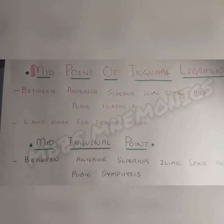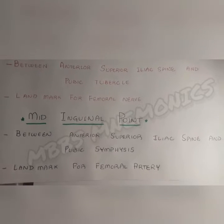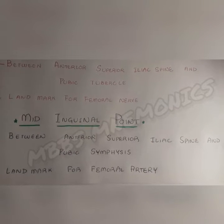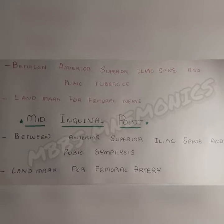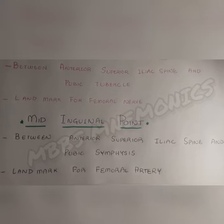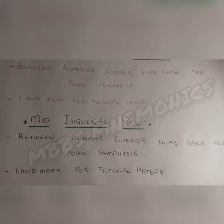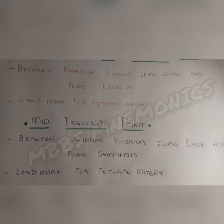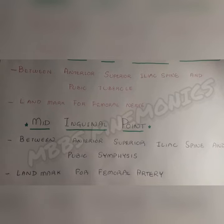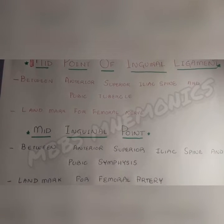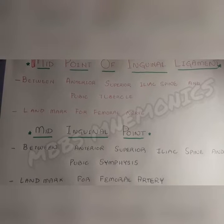While the mid-inguinal point is halfway between the anterior superior iliac spine and the pubic symphysis, and it is a landmark for the femoral artery — where you feel the femoral pulse. Note the difference: the midpoint of the inguinal ligament is between the anterior superior iliac spine and the pubic tubercle.